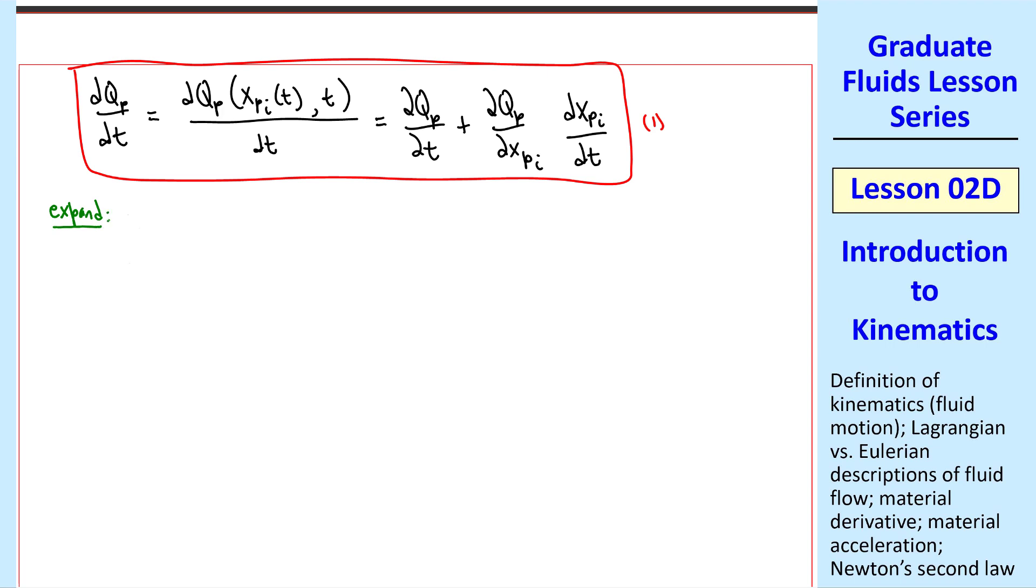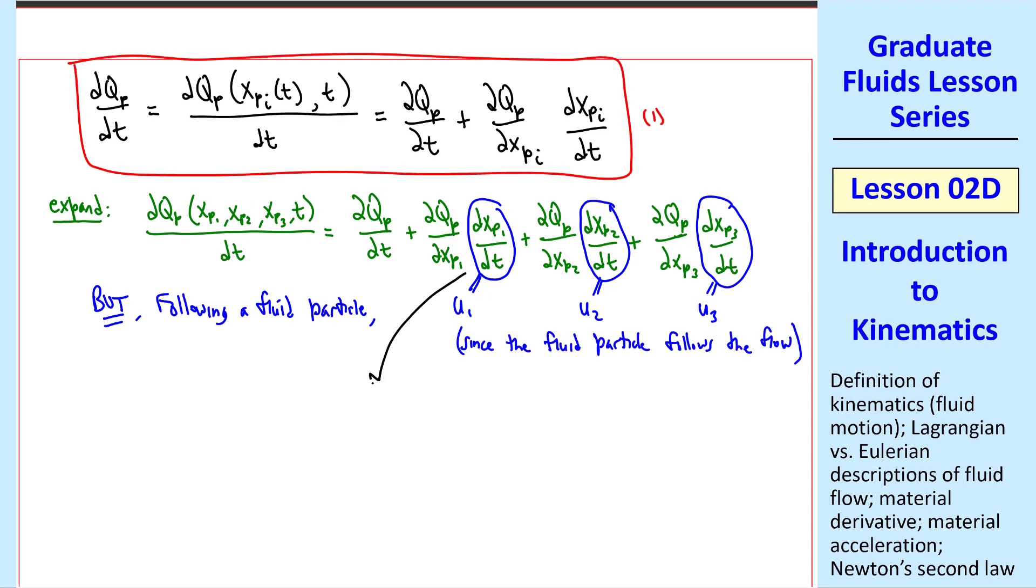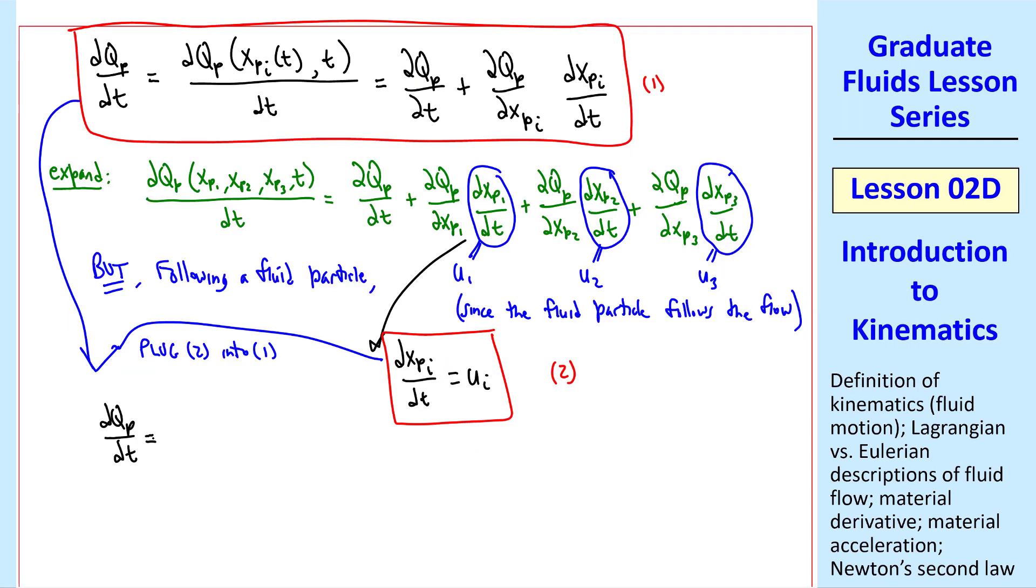As a quick review of tensor notation, we can expand this, where qp is a function of the three components of vector xp and time. So the derivative, dqp dt, is del qp del t plus del qp del xp1 dxp1 dt. We repeat for the other two components, indices 2 and 3, and perhaps we see more clearly how the chain rule is working. But this expression is identical to this expression in tensor notation, where the chain rule kind of falls out automatically, since this repeated index implies we're summing over 1, 2, and 3. But following a fluid particle, dxp1 dt is equal to u1, dxp2 dt is equal to u2, and similarly for u3, by definition. We can collect all these together and write dxpi dt equal ui. I'll call that equation 2.